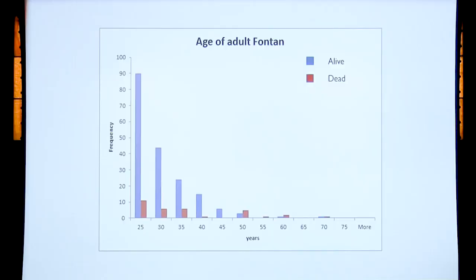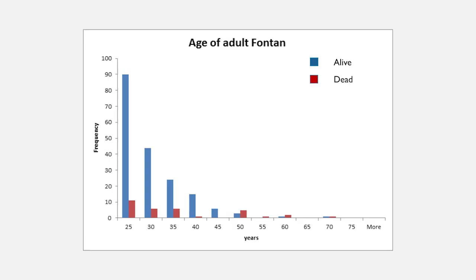This is the current age profile of the patients we're looking after in the adult sector. We have about 300 adult patients who have been transitioned. The ones in red are the ones who've died, and you can see that death doesn't seem to relate particularly well to age — the deaths are spread across the whole age group.